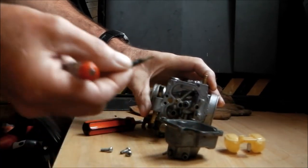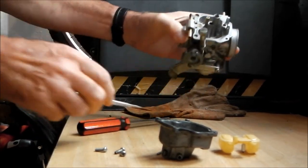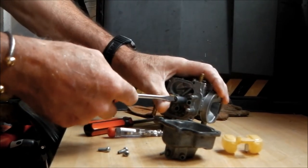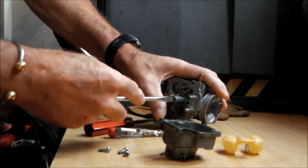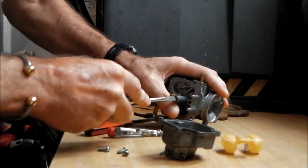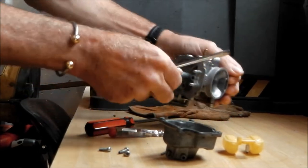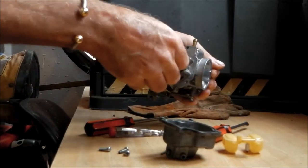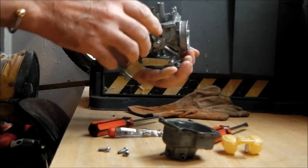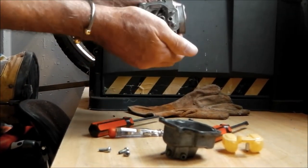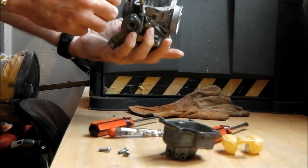So we'll bundle it in there. We'll pretend that's full of carb cleaner. This one, this one's the main jet. Somebody's done it up too tight by the looks of it. There we go. There's the main jet. Put that in there as well to soak. So that's the bottom of the carb.